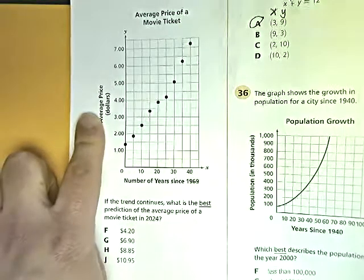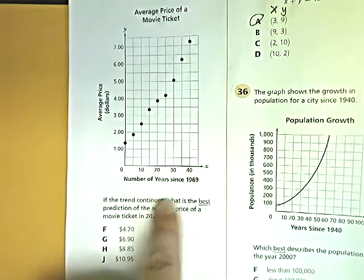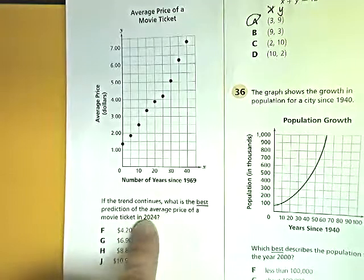What's this? The number of years since 1969. If the trend continues, what is the best prediction of the average price of a movie ticket in 2024?